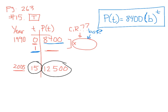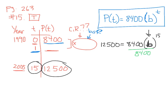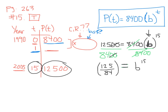Dividing both sides by 8,400, I get B to the power of 15 equals 12,500 over 8,400, which reduces to 125 over 84. To get rid of the exponent 15, I don't need logs here — we're not trying to find the exponent. Instead, I take the 15th root of both sides, just like taking the square root to solve B squared equals 9.